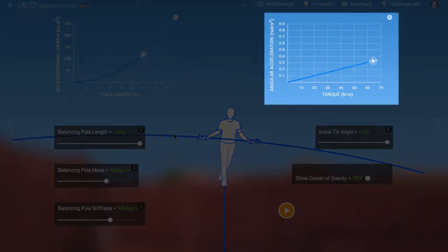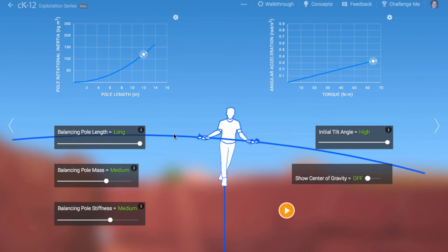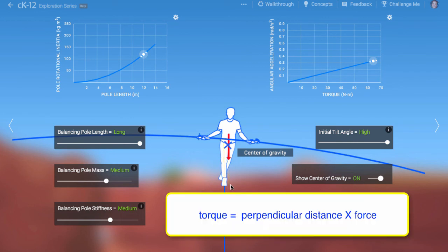The graph at right gives us an idea of how the angular acceleration of the system depends on the applied torque. The torque is calculated by taking the horizontal distance from the pivot point at the walker's feet to the center of gravity and multiplying this by the total weight of the system.